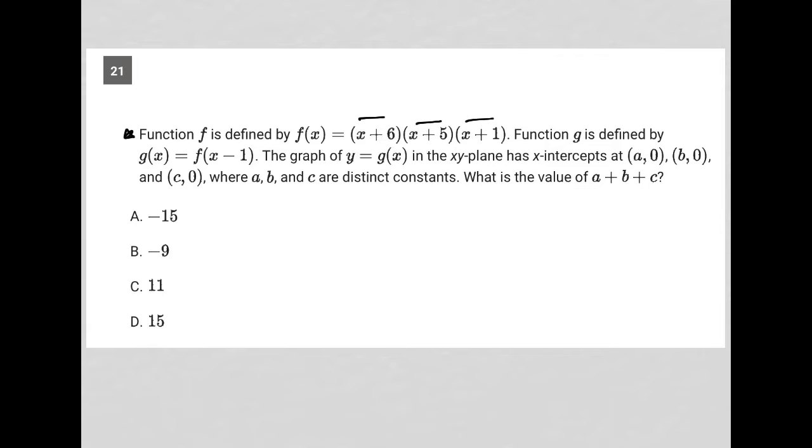Function g is defined by g(x) equals f(x-1). The graph of y=g(x) in the xy plane has x-intercepts at (a,0), (b,0), and (c,0).